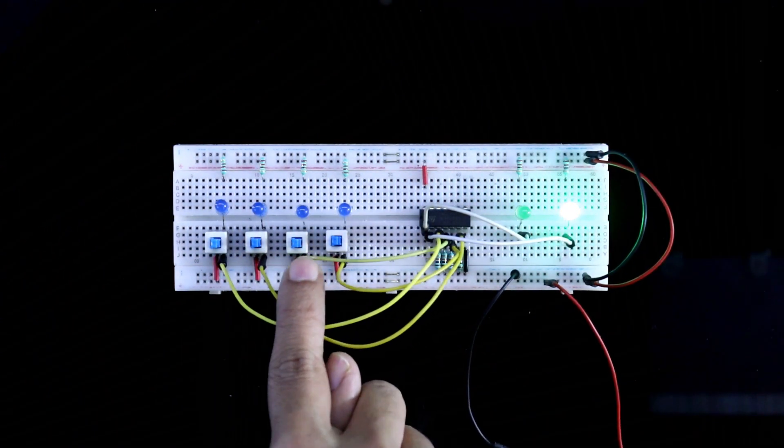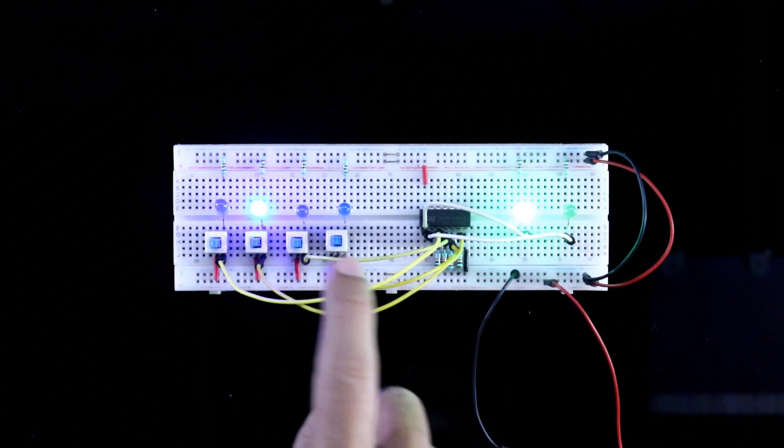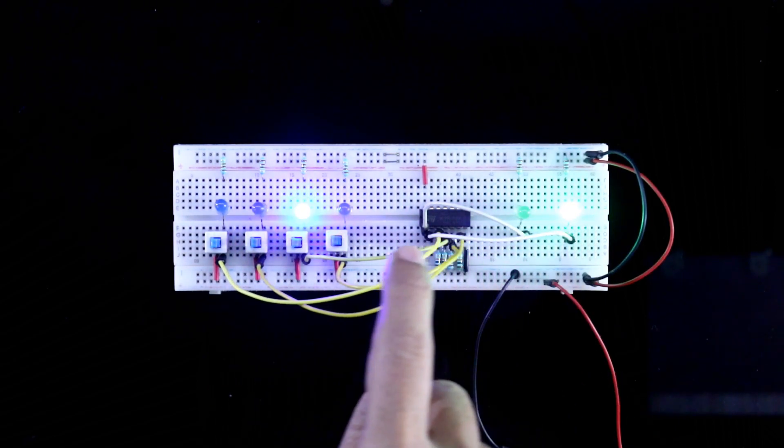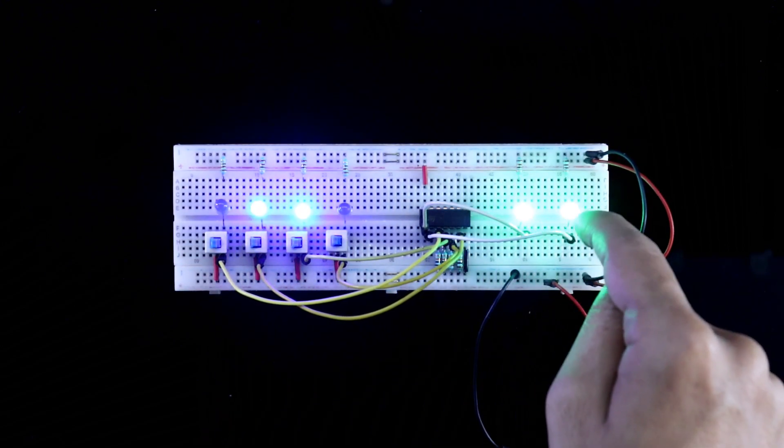This is set, reset. Set is 1, Q is 1. Reset is 1, Q bar is 1. Now if both are 1, Q and Q bar is 1.